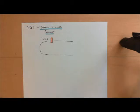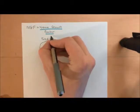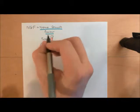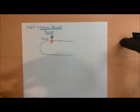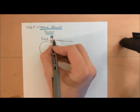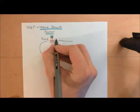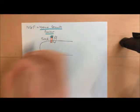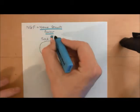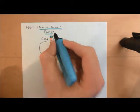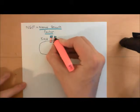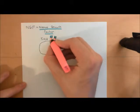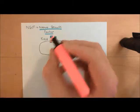When nerve growth factor binds to the TrkA, that will cause conformational changes in the TrkA, which will then allow it to dimerise with another TrkA receptor. This other TrkA receptor will need to have a nerve growth factor molecule also bound to it. So here are two TrkA molecules, both with nerve growth factor molecules bound, and they can now dimerise.